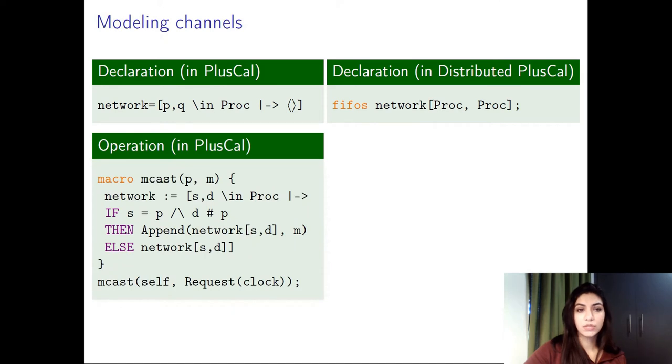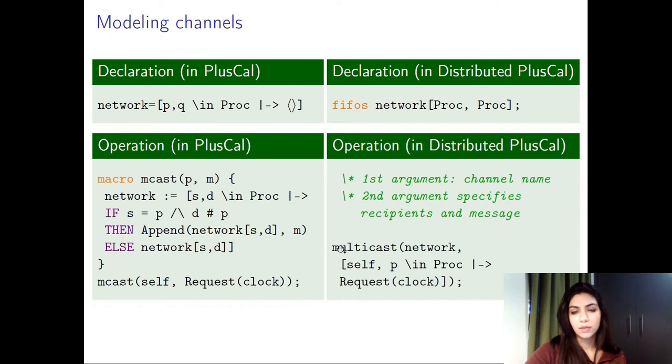Also for implementing a channel operation in PlusCal, you will define a macro, give it the appropriate body, and then later call the macro. In distributed PlusCal, you can simply use one of the predefined operators. For example, here we have an operator called multicast, where the first argument represents the channel name and the second argument represents an expression that specifies the intended recipients as well as the message that needs to be sent.